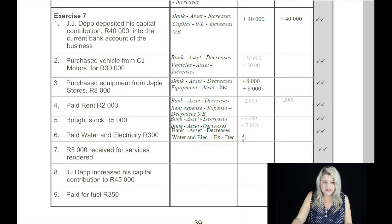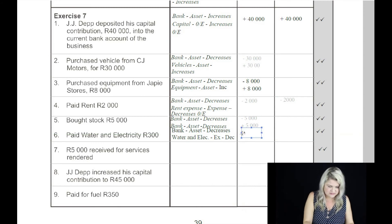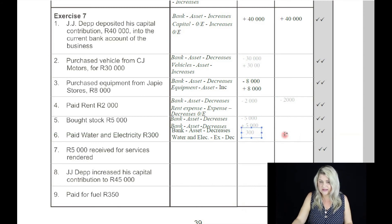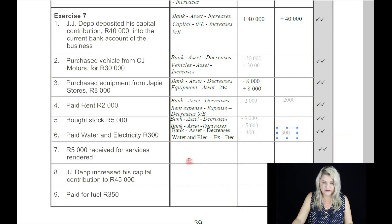On the sixth: paid water and electricity, 300 Rand. Where do we pay from? We pay from the bank, which is an asset, which decreases. So the bank decreases by 300 Rand. What are we paying for? An expense. And an expense always decreases owner's equity — same value, 300 Rand.